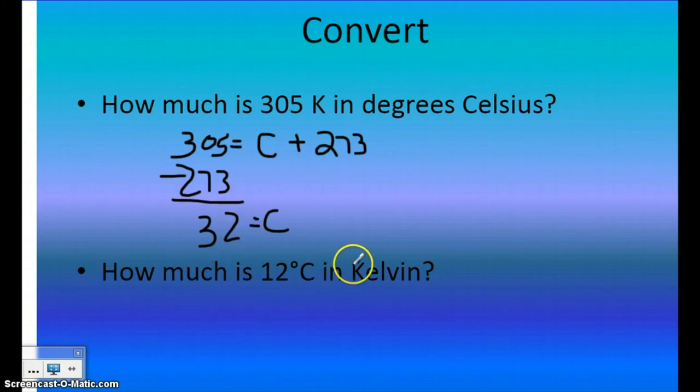And then you do the exact opposite if you're given a value in degrees Celsius, which is what will happen most often in our gas law problems. So most of the time, you'll plug it in for the C, and then you'll add 273. So, 12 plus 273 gives us 285. And that's all there is to it.